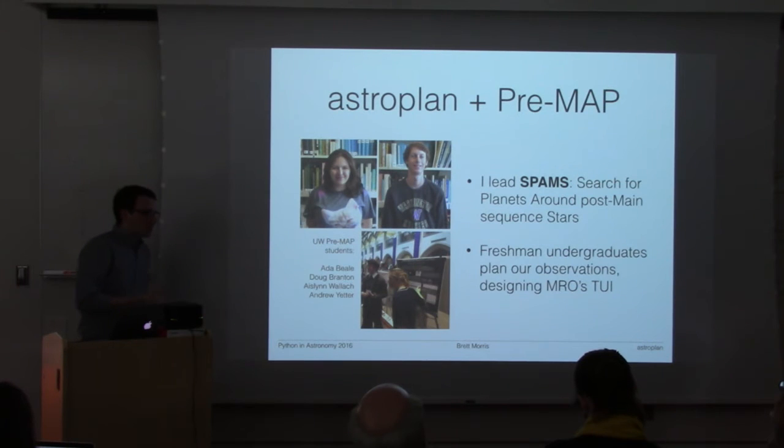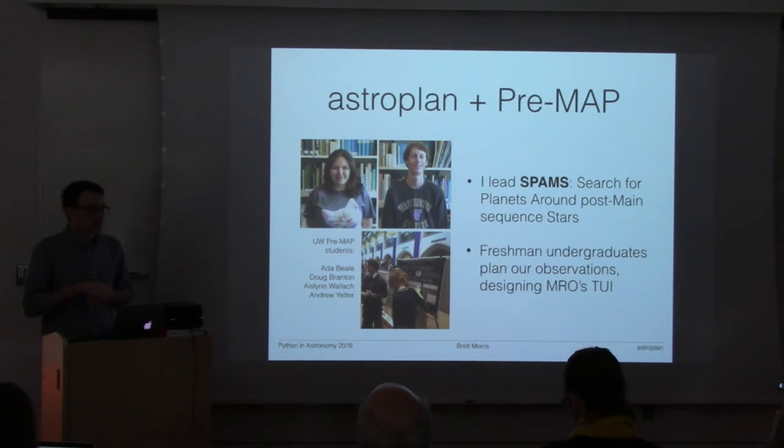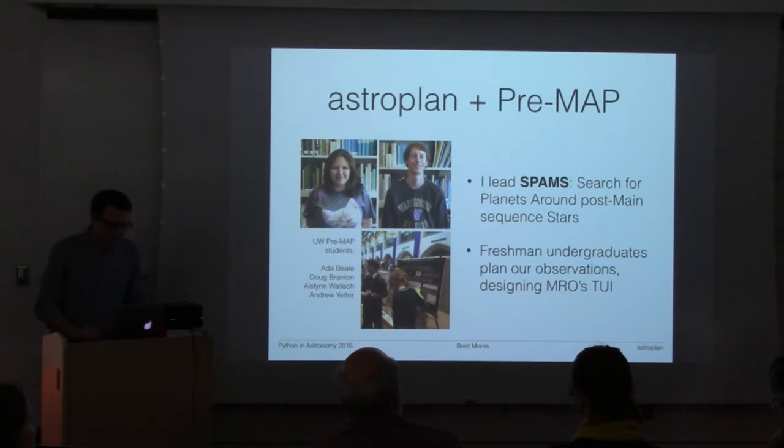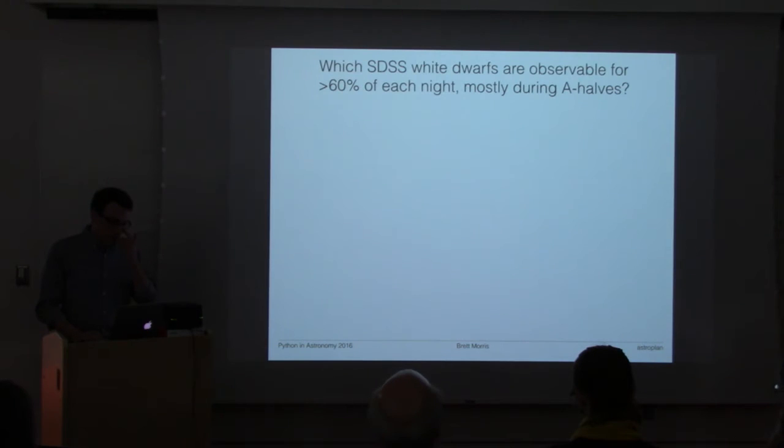It's thought that the metal pollution in the atmospheres of these white dwarfs are coming from planetary debris left over in these systems after the death of the star. Last year unfortunately the first such transiting object was discovered around a white dwarf so we didn't get the first one but we're still watching. So far we've observed for more than 70 nights at APO on the 0.5 meter telescope and we plan those observations using astroplan.